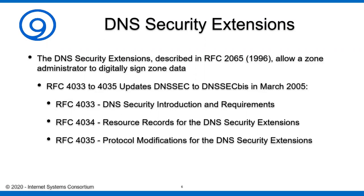RFC 4033 and 4035 are the updates to DNSSEC Bis, produced in March of 2005. It was specifically broken up into three separate RFCs. RFC 4033 was the introduction and requirements — the preamble as to what the plan would actually do. RFC 4034 defined the resource records for the DNS security extensions — the additions to the protocol required for DNSSEC. And RFC 4035 was the modifications to the existing protocol to allow this to occur.